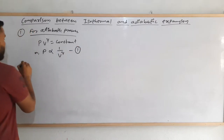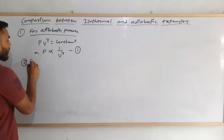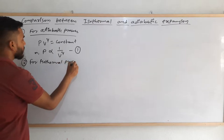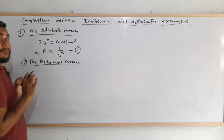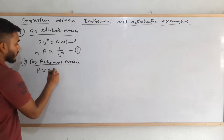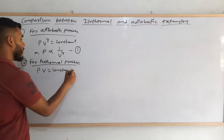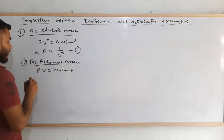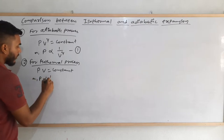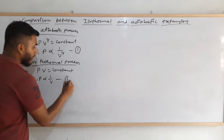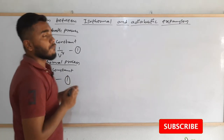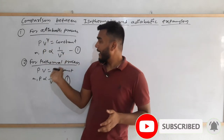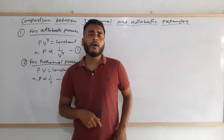Similarly, for an isothermal process, another conclusion can be drawn: pV equals a constant — the product of pressure and volume is constant in the case of an isothermal process. We can write p is proportional to 1 over v, that is, pressure is inversely proportional to the volume. So these are the two cases for adiabatic and isothermal processes.